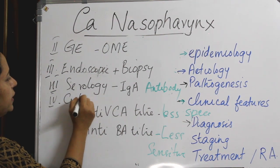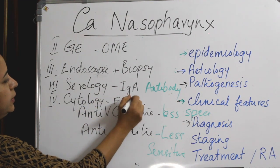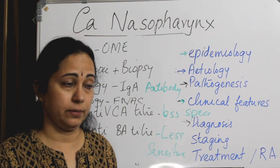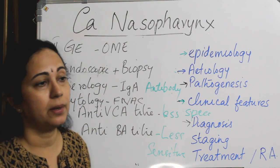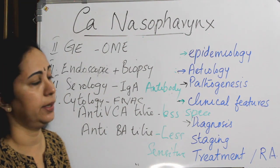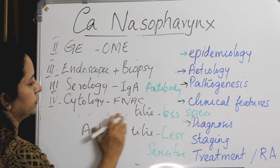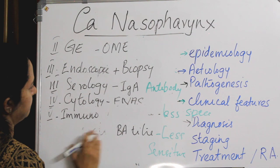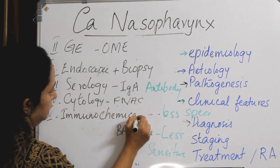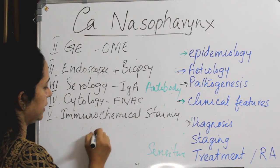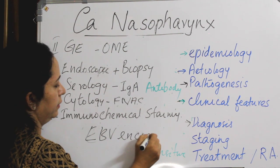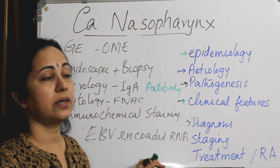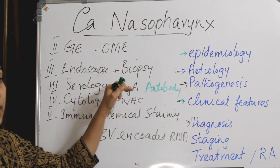The fourth diagnostic method is cytology — specifically FNAC (fine needle aspiration cytology) of a neck node. A positive FNAC report can help differentiate a metastatic node from a primary tuberculosis neck node, which is important. Another method is immunochemical staining, by which EBV-encoded RNA can be stained. This is more specific and useful in cases of repeated negative biopsies.